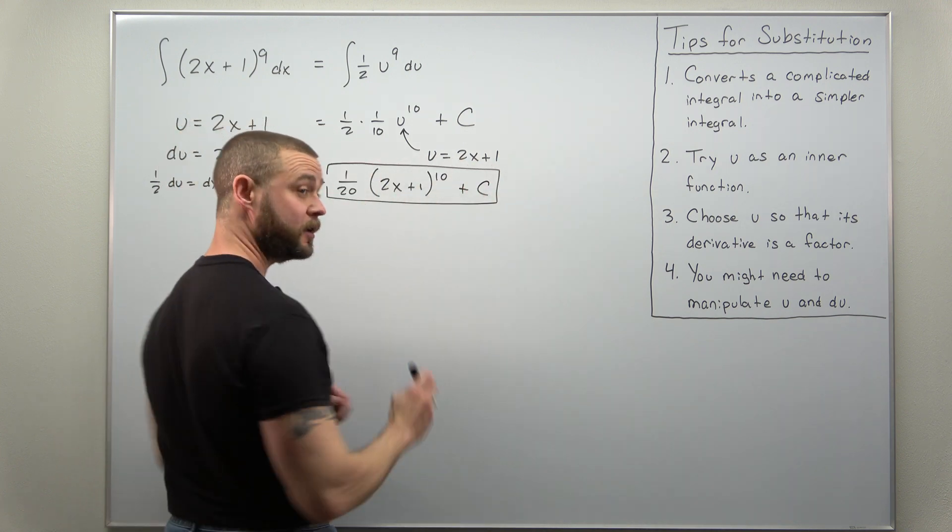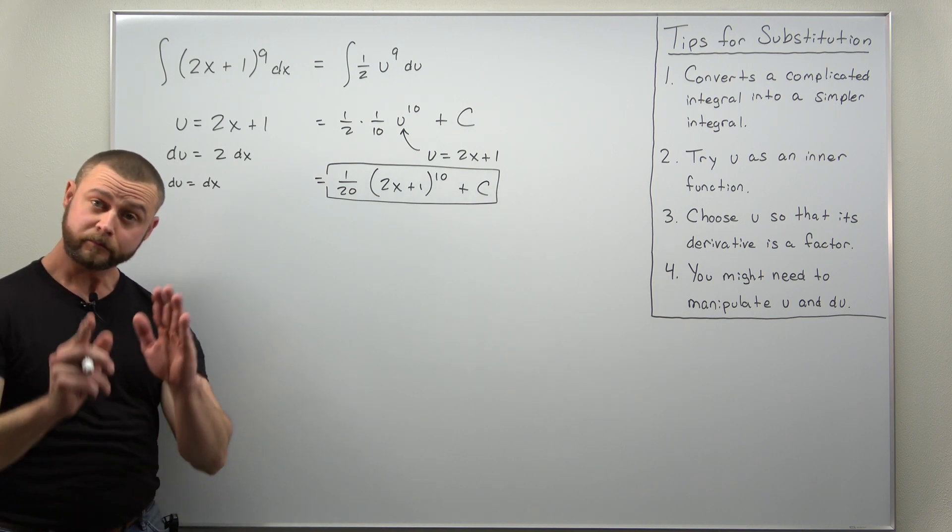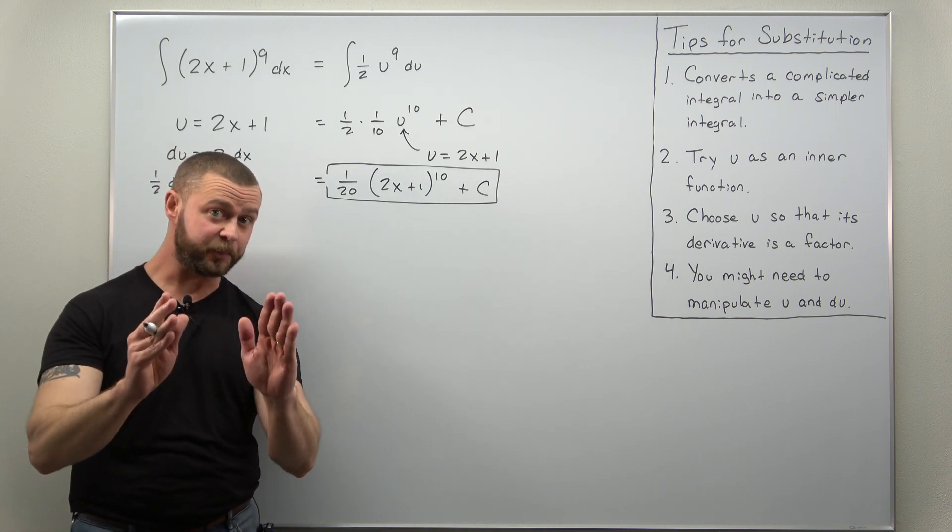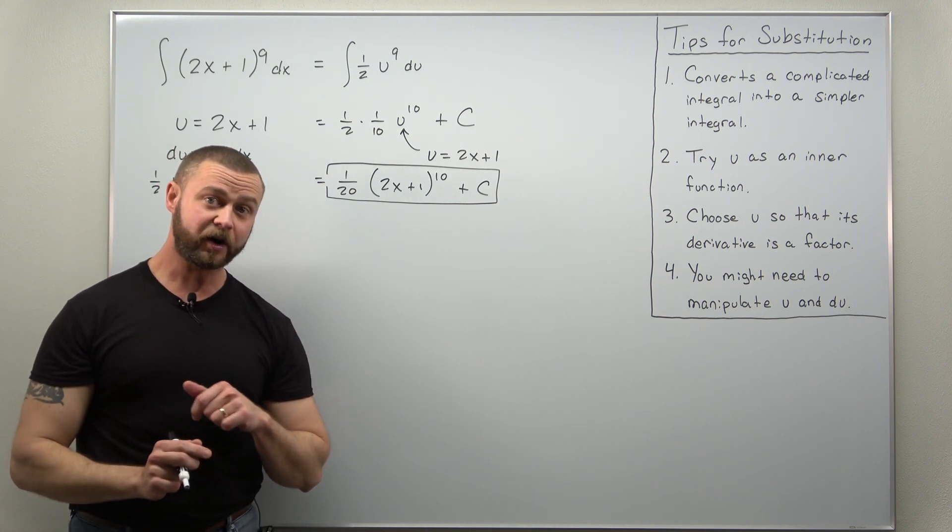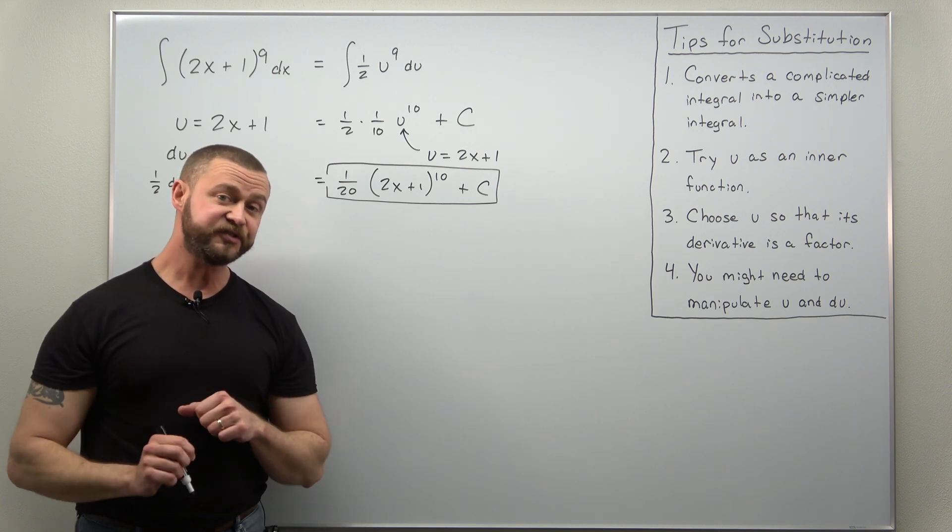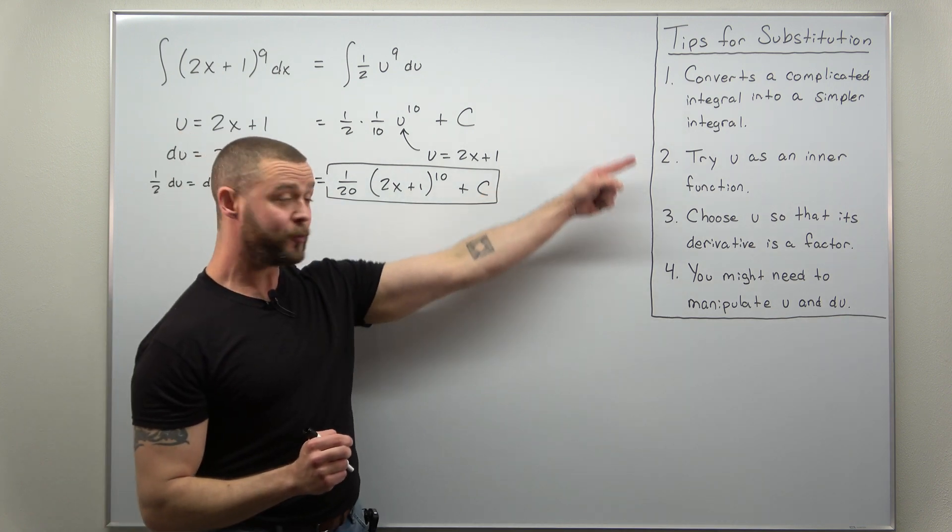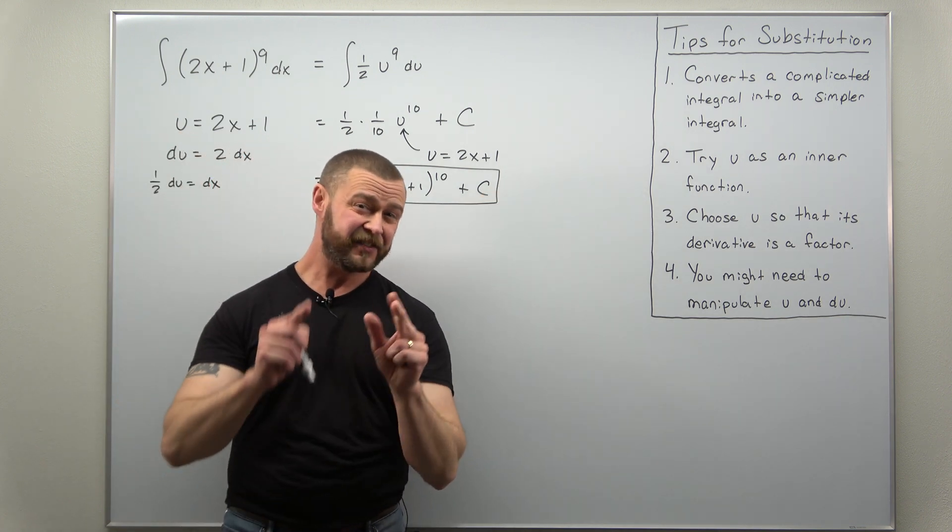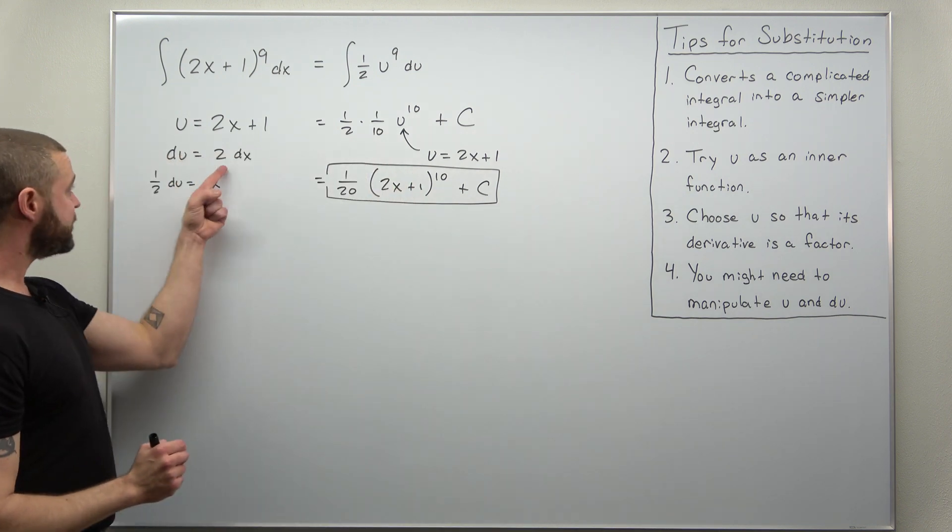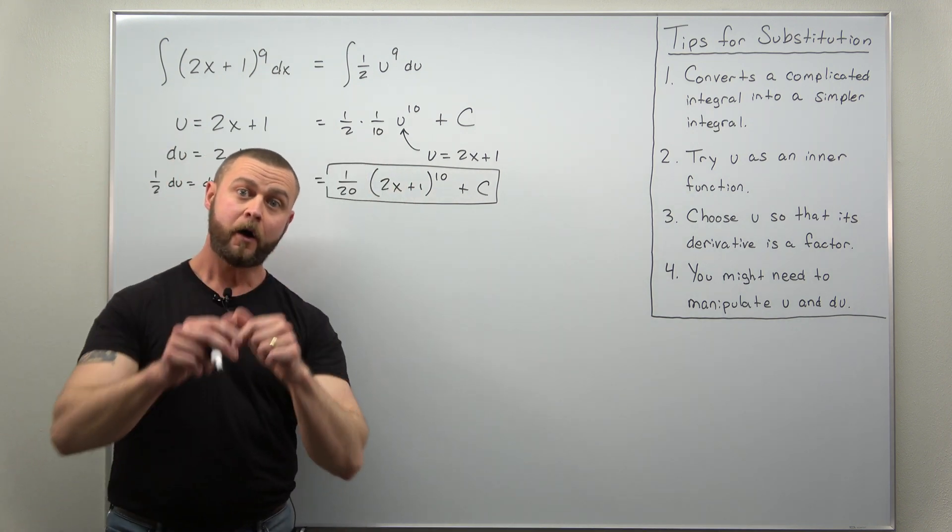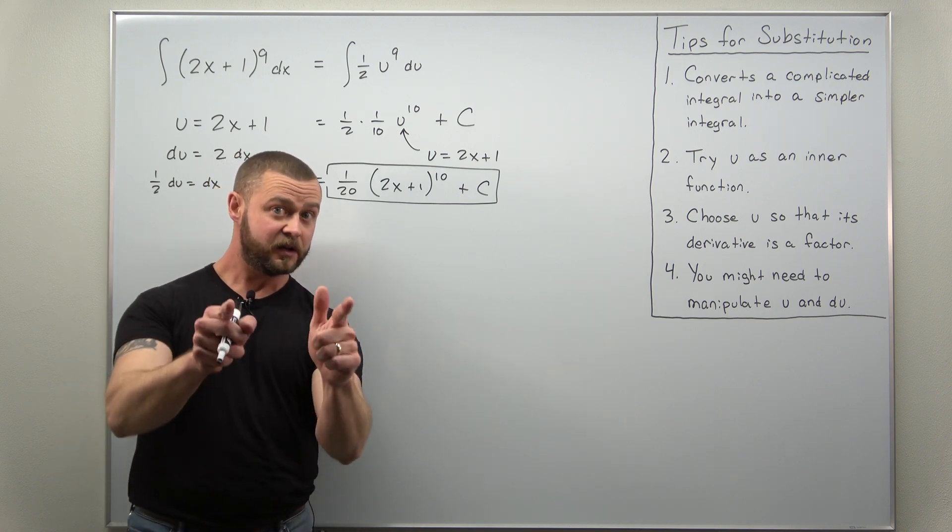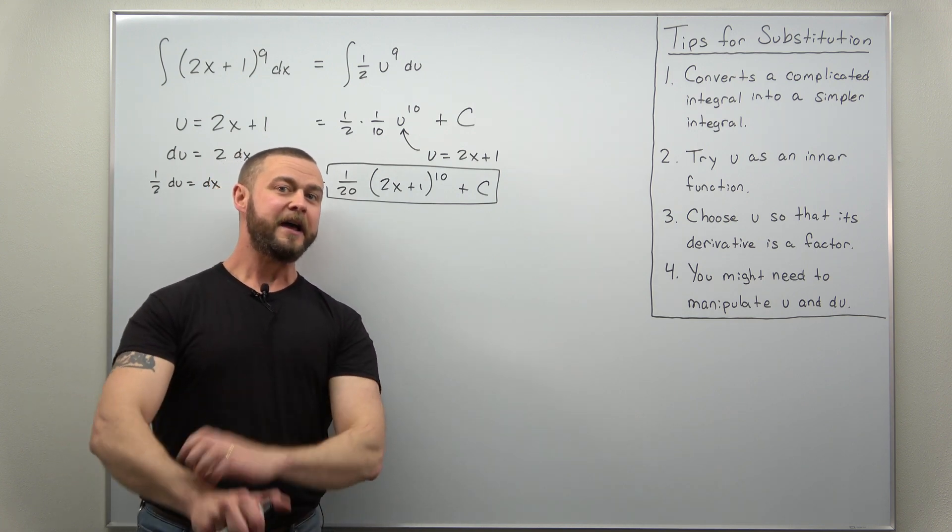And that is it for this problem. Again, this one was really simple. This is a good example to start with just to make sure you understand how to go through the different ways to choose u and the subtle little difficulties here with factors being off. Hope you enjoyed the video. If you did, support the channel, like and subscribe.